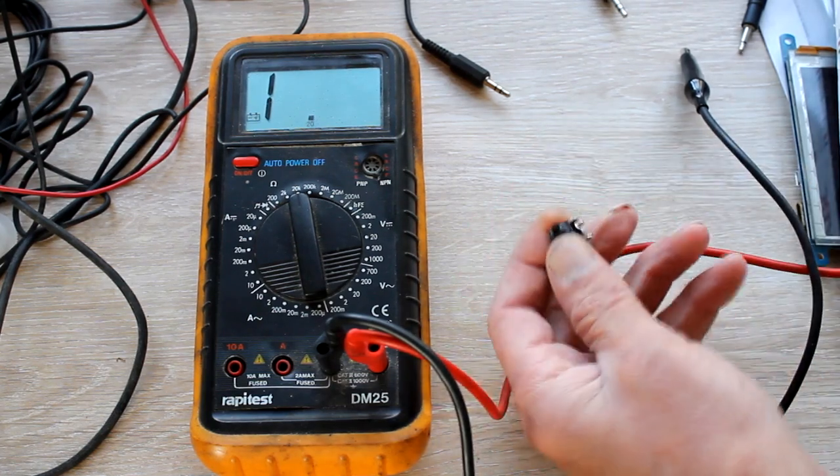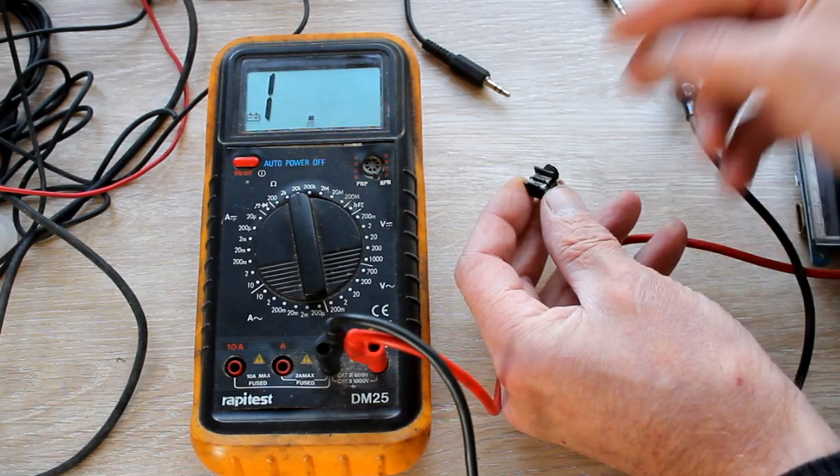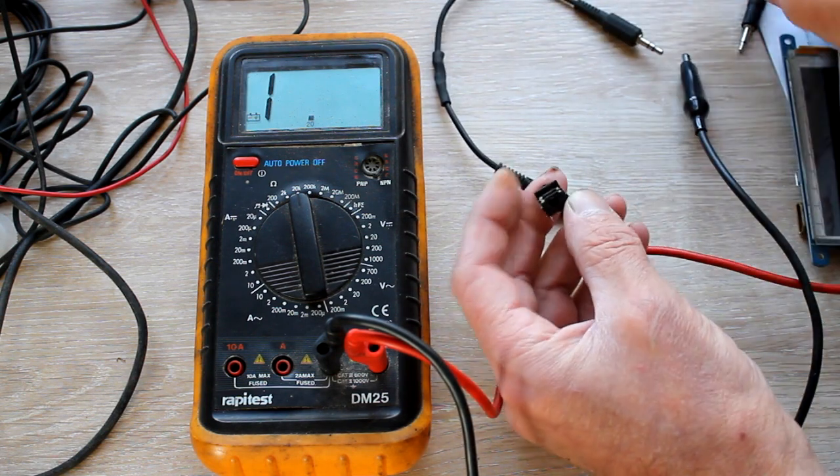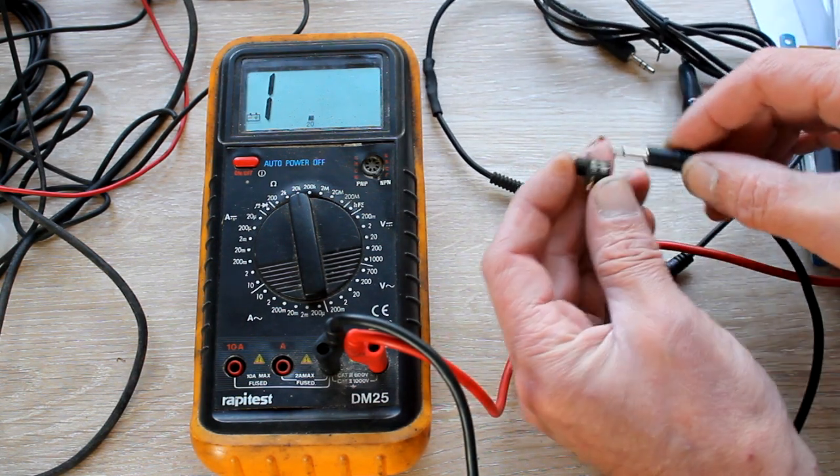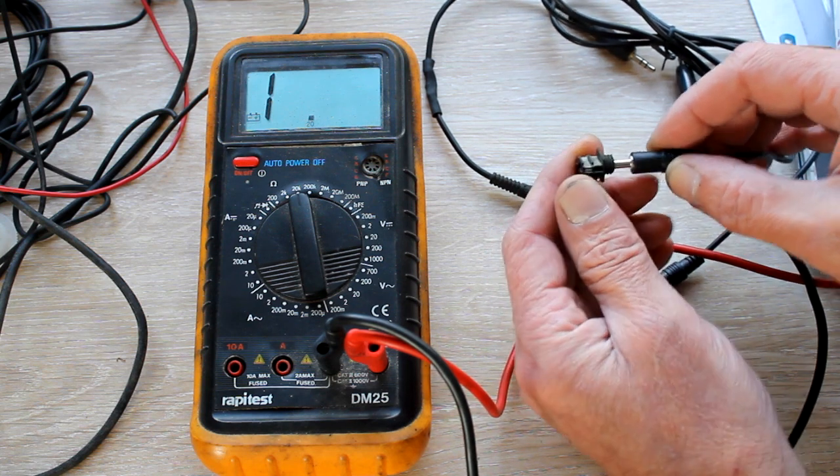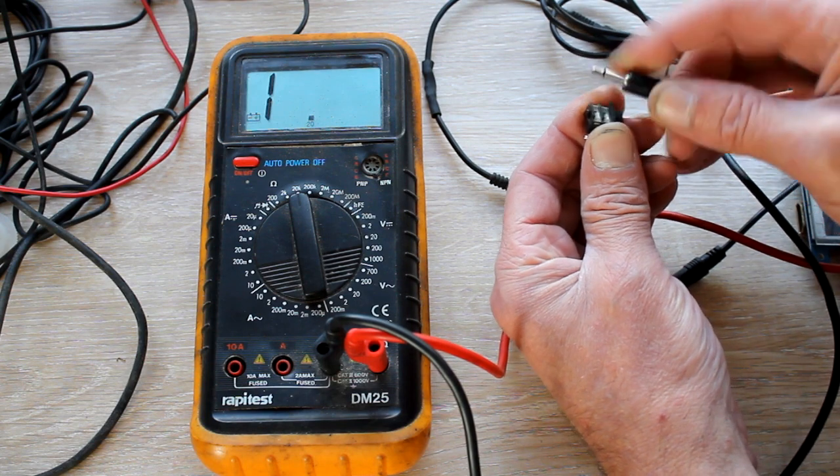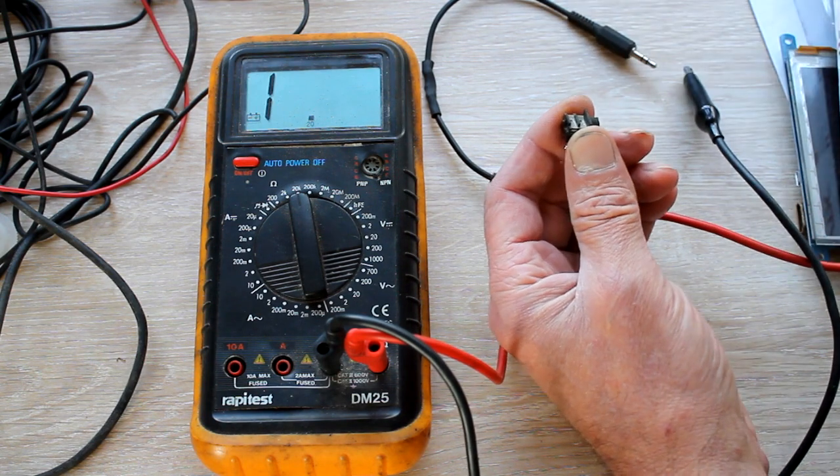Right then, if you wondered why the stereo mono jack doesn't work with the ZX Spectrum, here's your mono one look. Touches earth and the positive, no problem.